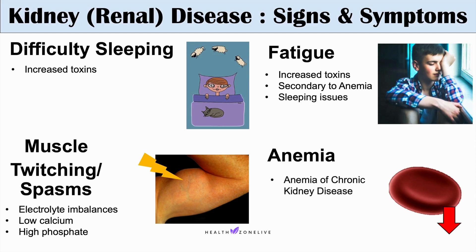The kidneys are very important in excreting many toxins and balancing electrolytes. One particular toxin is urea, a breakdown product of protein metabolism. The kidneys normally filter and excrete urea, but when there's kidney failure, this leads to increased urea in the blood — what we call uremia, or abnormally high levels of urea. Uremia can lead to several important signs and symptoms we need to recognize.